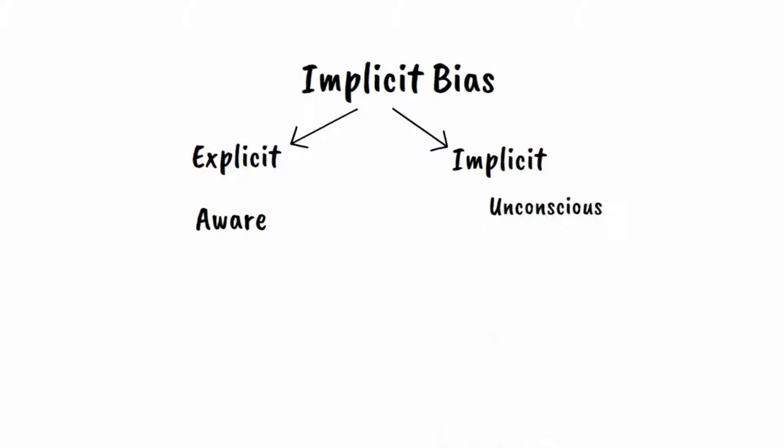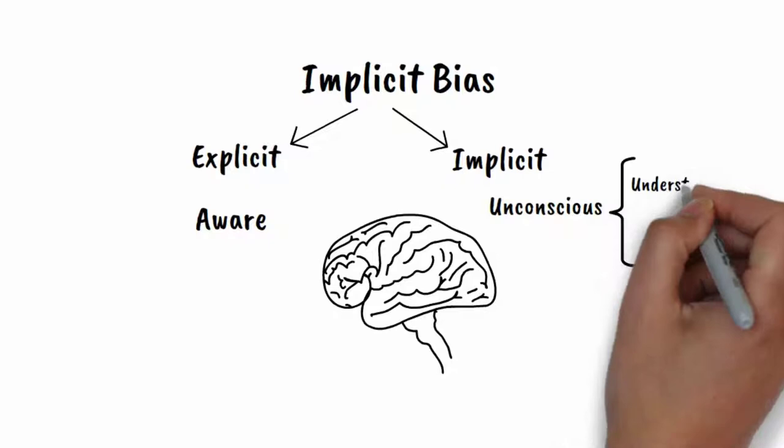First coined in 1995, implicit bias refers to the attitudes or stereotypes that affect our understanding, actions, and decisions in an unconscious manner.